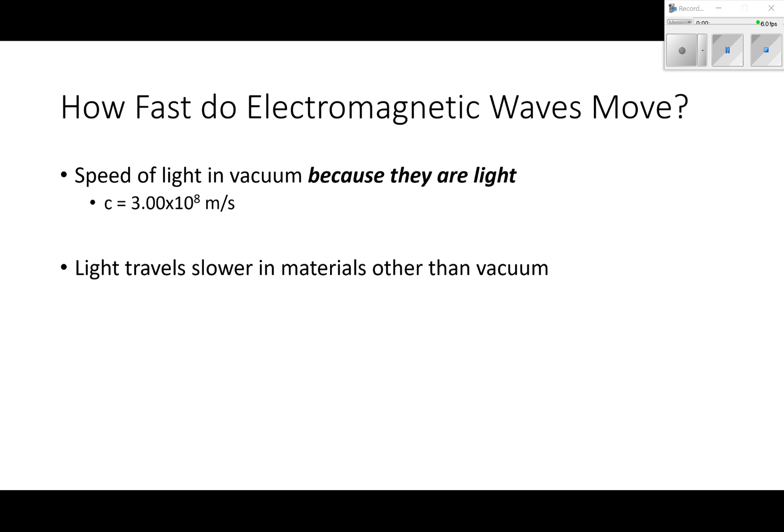How fast do electromagnetic waves move? Electromagnetic waves move at the speed of light because they are light. It's not a coincidence that it goes the speed of light, it is light. The speed of light in a vacuum is 3.00 times 10 to the eighth meters per second. It's really fast - that's 186,000 miles per second. We use a lowercase c for speed of light in vacuum, so c equals 3.00 times 10 to the eighth meters per second. Light travels slower in other materials like glass or water or air.